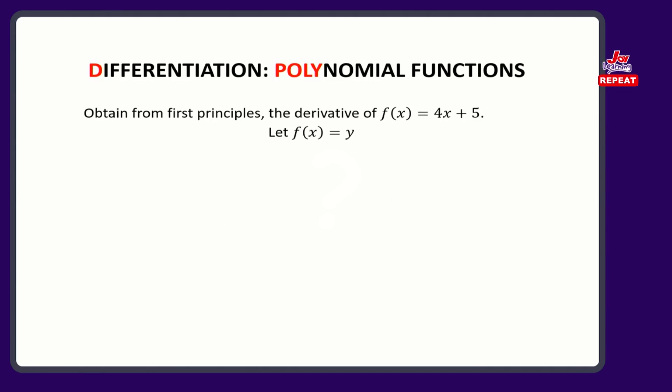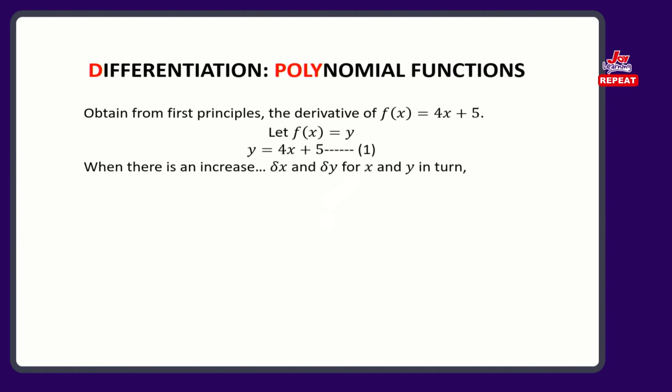Let f of x be y. So we have y equals 4x plus 5 — let's call that equation 1. Now let's add a little to both sides: a little of y, a little of x — delta y and delta x. If we add those, we'll have y plus delta y equals 4 multiplied by x plus delta x, because it was supposed to be 4x. All of that plus 5. If we expand, 4 by x gives 4x and 4 by delta x gives 4 delta x plus 5. That gives us equation 2.